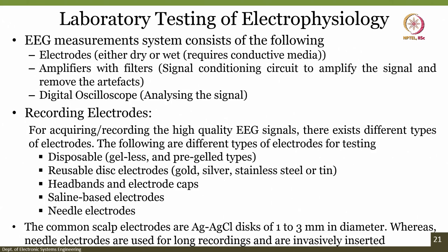Recording electrodes are used for acquiring high-quality EEG signals. Several different types are used: disposable electrodes which do not require gel or come with pre-gel; disc electrodes which are reusable and coated by gold, silver, stainless steel, or tin; headbands, electrocaps, saline-based electrodes, and needle electrodes. The most commonly used are the AgCl disc of 1 to 3 millimeter diameter. Needle electrodes are used for regular recordings and are invasive — meaning we can place the needle inside the brain.